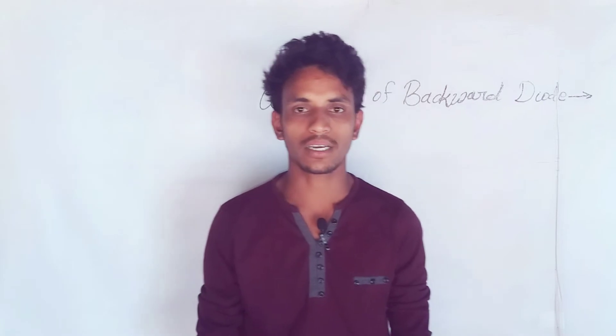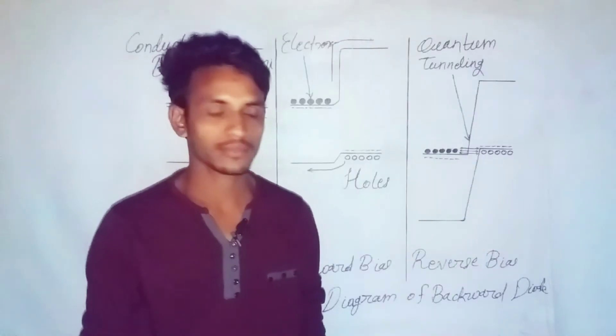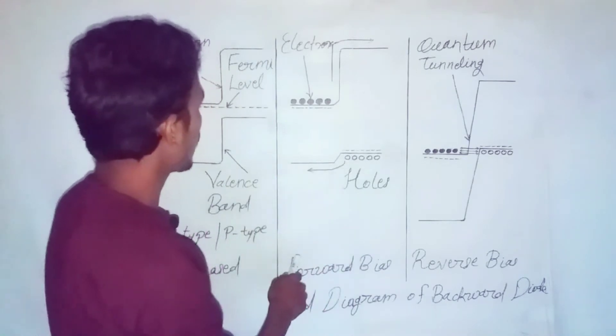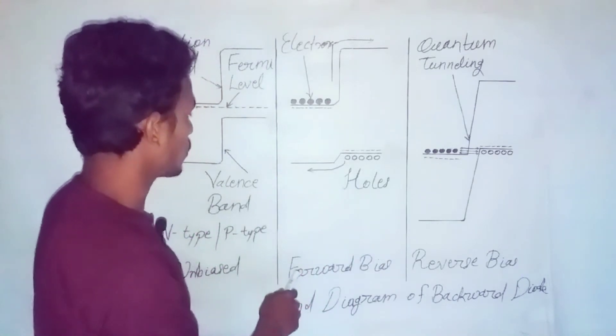The working principle of the backward diode is similar to that of the tunnel diode. The mechanism of quantum tunneling plays a crucial role in conducting current in reverse biasing operation. The working of the backward diode can be understood in detail with the help of the energy band diagram of the backward diode.